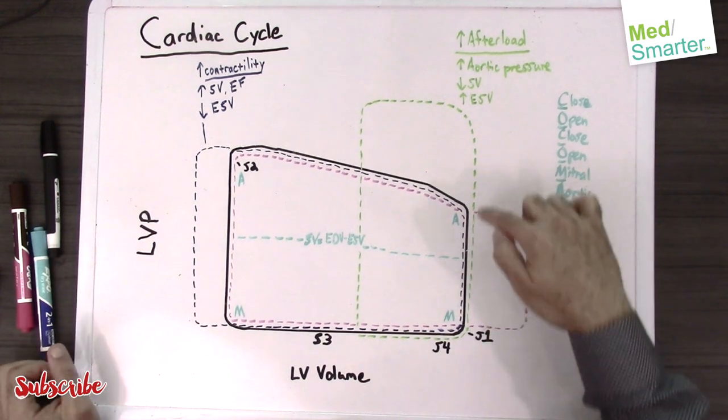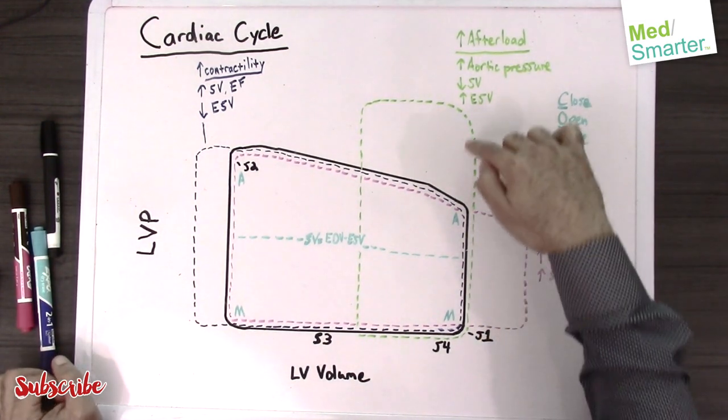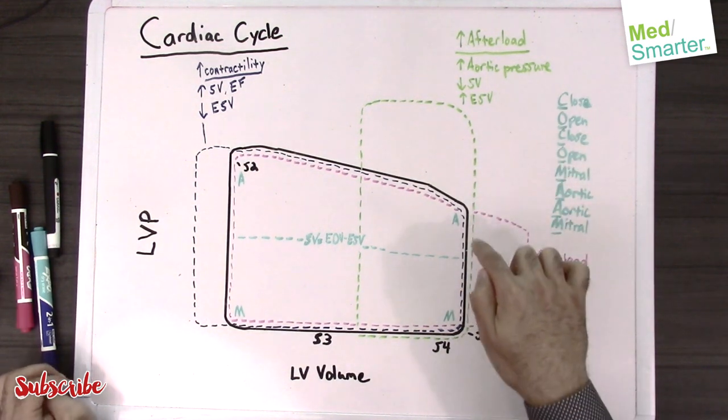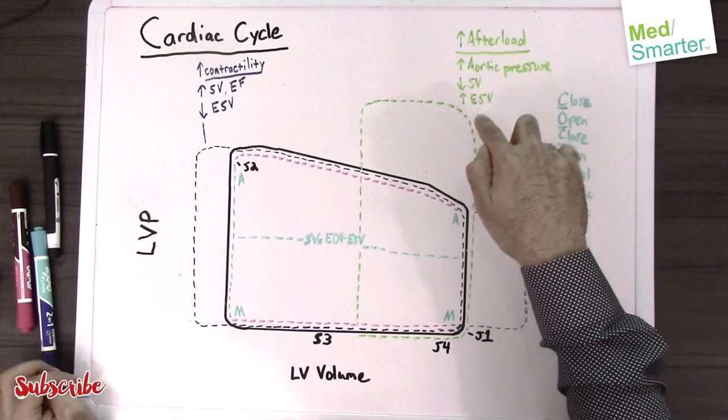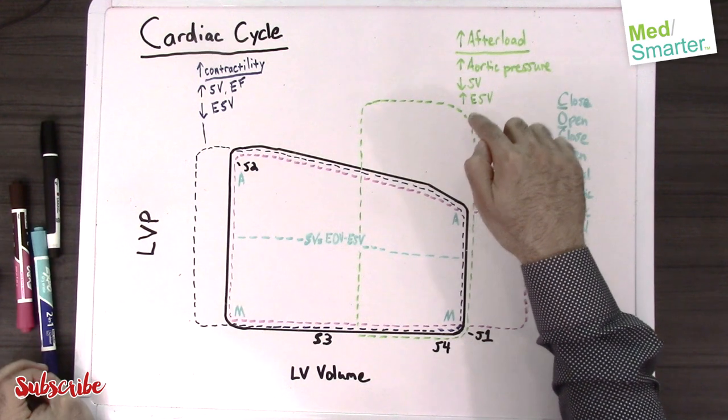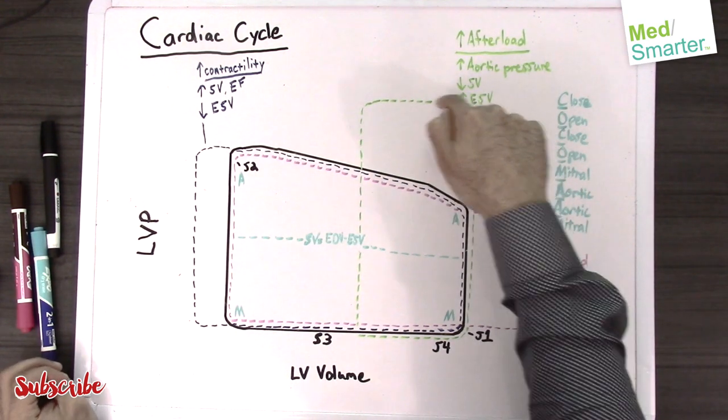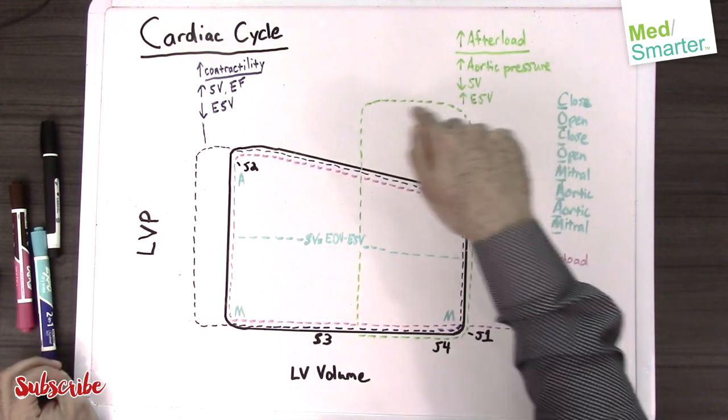So this isovolumetric contraction phase is elongated, and the problem with this is because we're spending all this time contracting to overcome the pressure in the aorta, now we've wasted that time and the ejection phase gets drastically reduced.